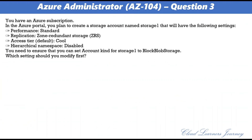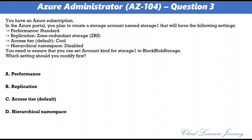Question 3. You have an Azure subscription. In the Azure portal you plan to create a storage account named storage1 with the following settings: Performance Standard, Replication Geo-Redundant Storage ZRS, Access Tier Default, and Hierarchical Namespace. You need to ensure that you can set the account kind for storage1 to BlockBlobStorage. Which setting should you modify first? Options: A: Performance, B: Replication, C: Access Tier Default, D: Hierarchical Namespace. The correct option is A: Performance.